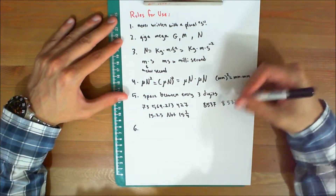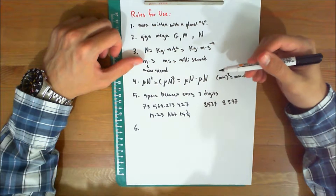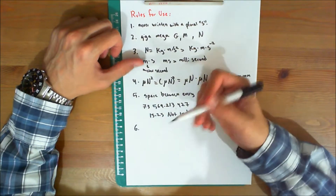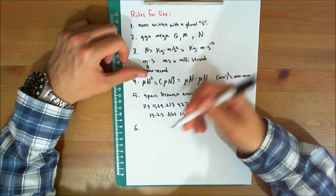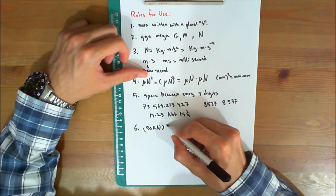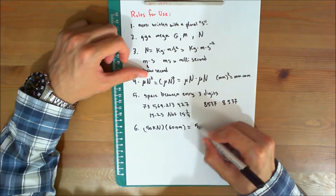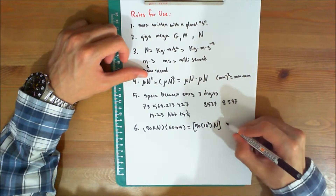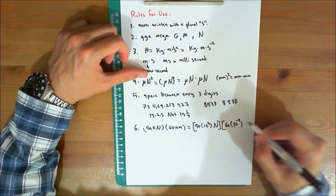Number six: when performing calculations, represent the numbers in terms of their base or derived units by converting all prefixes to powers of 10. The final result should be expressed using a single prefix. After calculation, it is best to keep numerical values between 0.1 and 1000; otherwise, a suitable prefix should be chosen. For example, 50 kilonewtons times 60 nanometers equals 50×10³ N times 60×10⁻⁹ m.